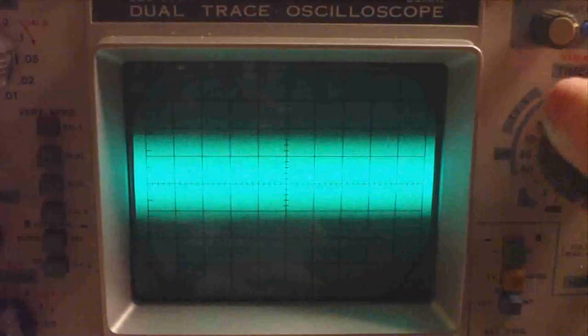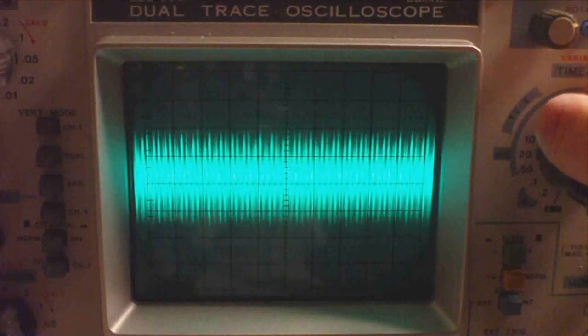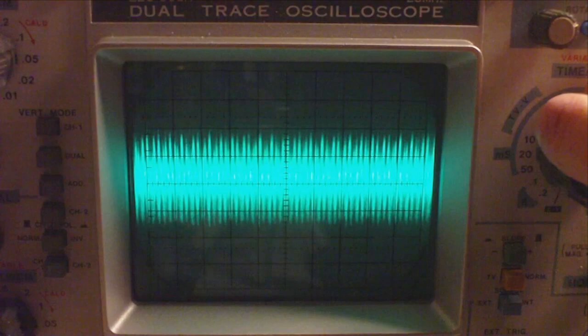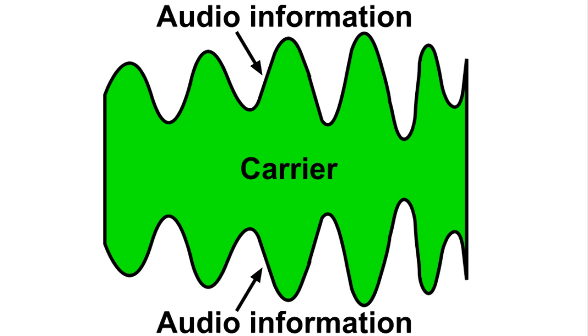Here I've turned up the scope so we can see the carrier, and of course when I do that we can no longer see the audio information. The audio information rides on the top and the bottom of this modulated carrier.